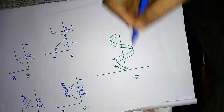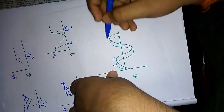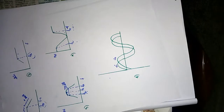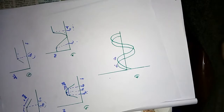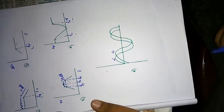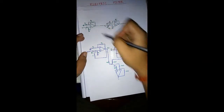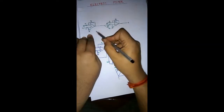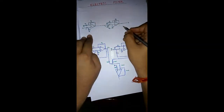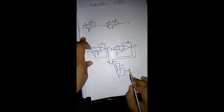The all pass filter, as the name suggests, passes all types of frequencies. The only difference is that its output is lagged by some phase from its input. There are two circuits shown: one is a first order band pass filter circuit and the other is a second order band reject filter circuit.